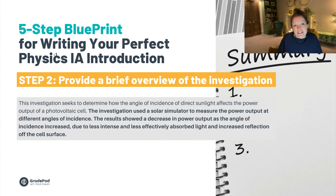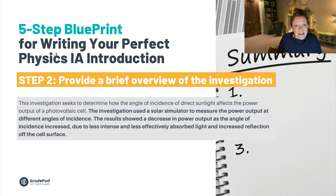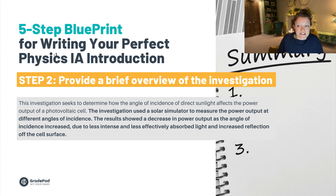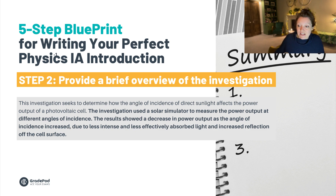Step two is to provide a brief overview of the investigation, and it should be in two sentences — no more than that. I've left the first sentence and the text in bold shows the addition. My brief overview states what I did in one sentence and what the results were in one sentence. Now it's getting a bit wordy, but I'm not too worried about that at the moment.